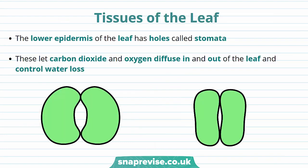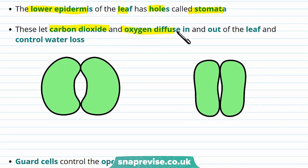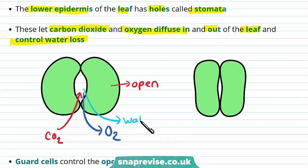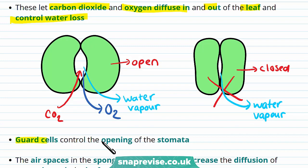Now let's look at some more tissues of the leaf. The lower epidermis of the leaf has holes called stomata. Stomata are essential for the plant as they let carbon dioxide and oxygen diffuse in and out of the leaf, and they also control water loss. When a stomata is open, it allows CO2 in so it can be used for photosynthesis, and it also allows oxygen to diffuse out of the leaf as a waste product. Water vapour can also diffuse out of the stomata. When the stomata is closed, it stops water vapour from escaping the leaf to stop the plant losing too much water. The guard cells surround the stomata and they control the opening of the stomata.